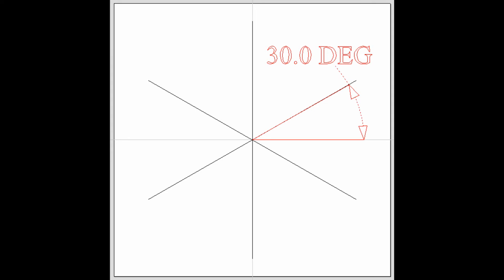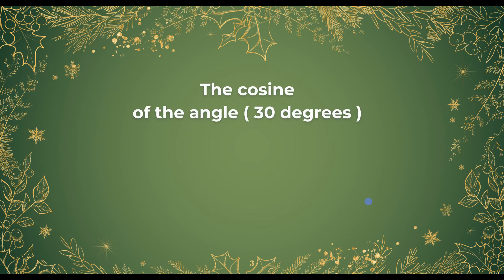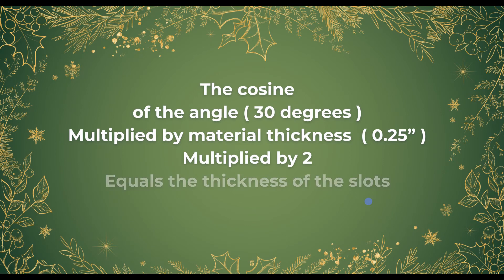In order to figure out how thick the slot should be so that these three pieces fit together nicely, it's the cosine of the angle. We know it's going to be 30 degrees, so the cosine is 0.866. Using that number multiplied by the material thickness — which in my case is 0.25 inch thick material — then multiply that number by two gives us the dimension of the thickness of the slot.